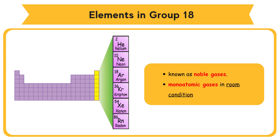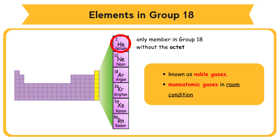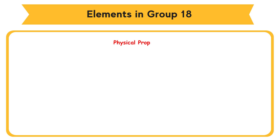Helium (He), Neon (Ne), Argon (Ar), Krypton (Kr), Xenon (Xe), and Radon (Rn) are the elements located in Group 18. Note that Helium is the only member in Group 18 without the octet electron arrangement.